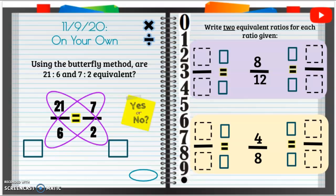November 9th, 2020, on your own. All right, using the butterfly method, are 21 to 6 and 7 to 2 equivalent? Yes or no?